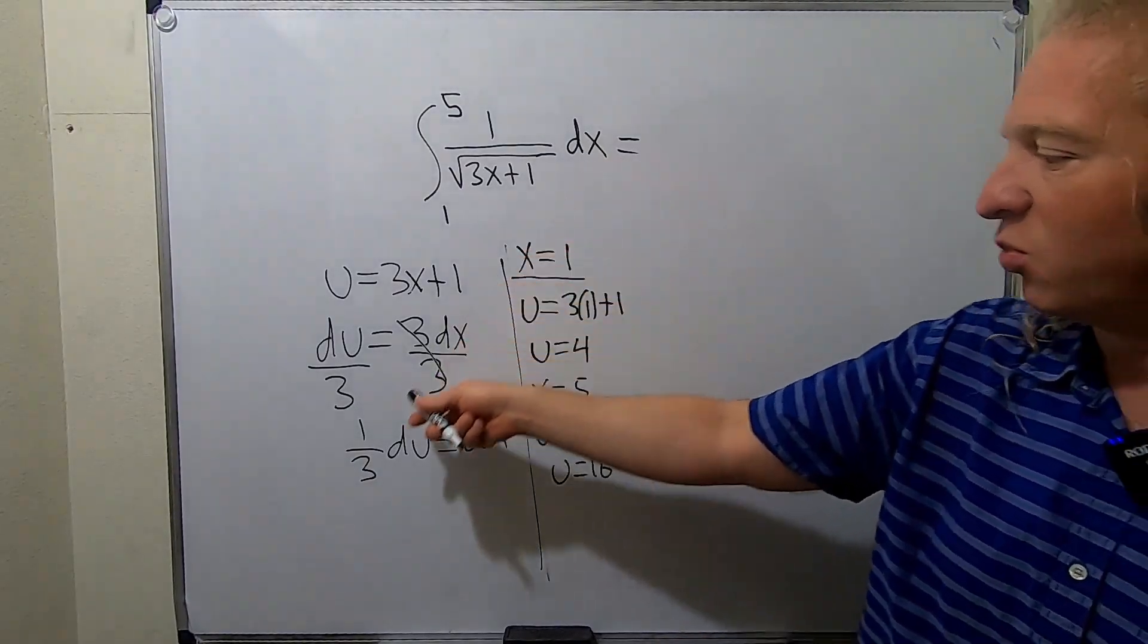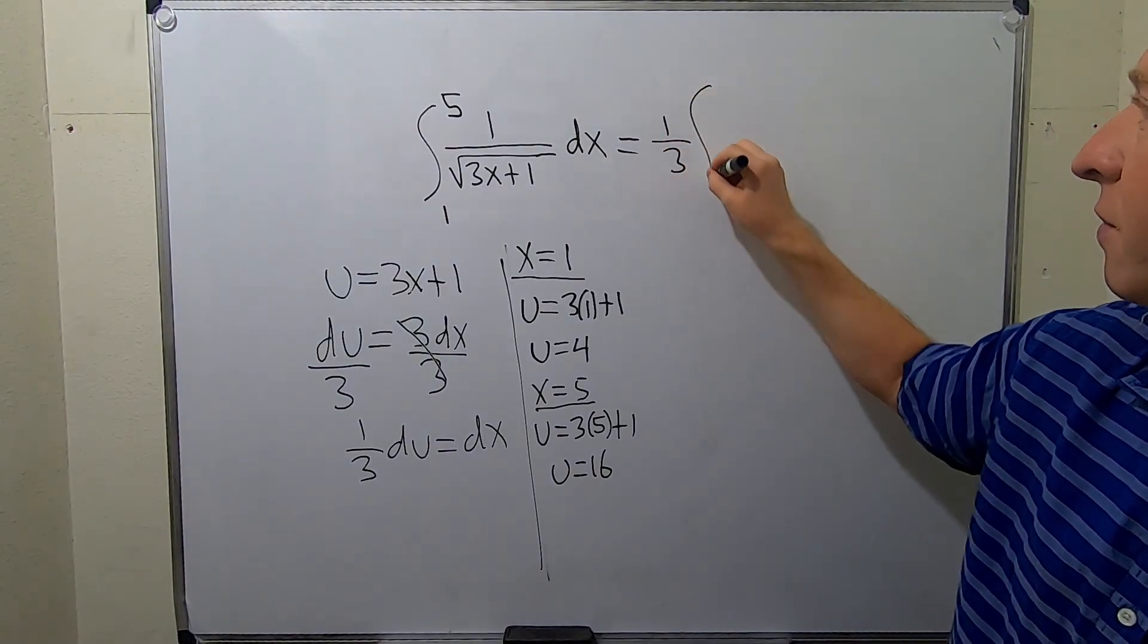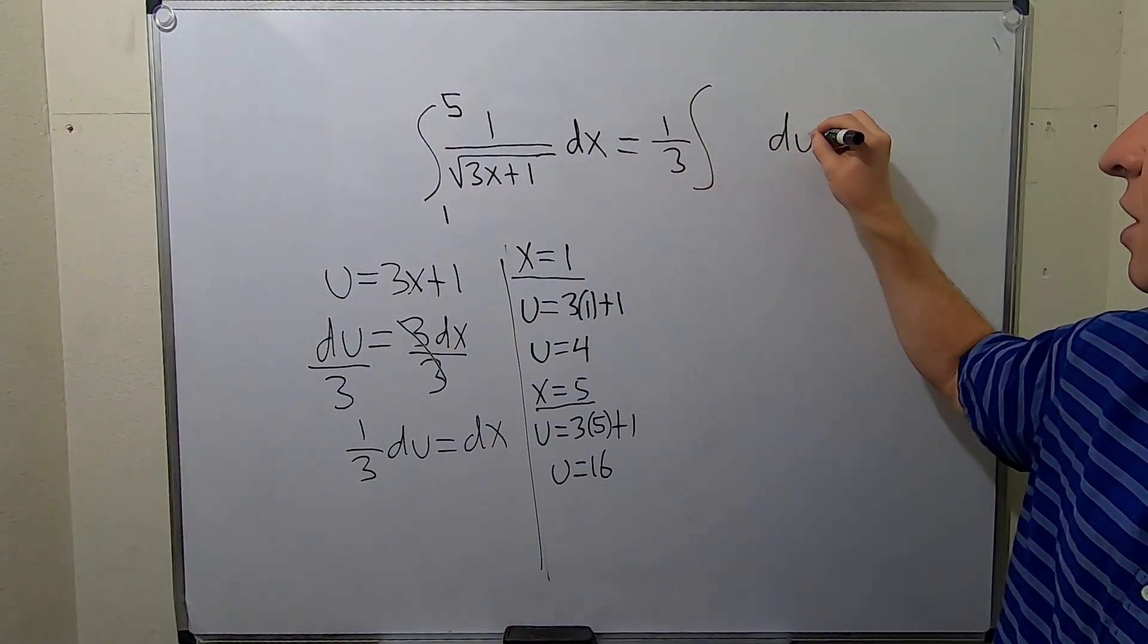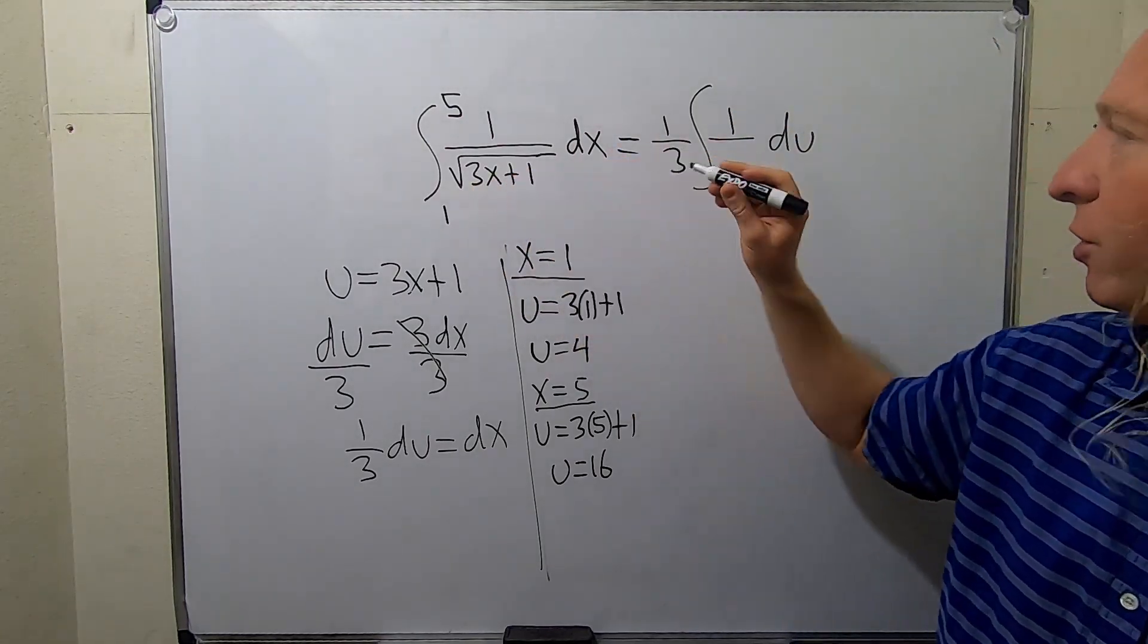So the dx is 1 third du, so we can pull out that 1 third. Then we have the du. Then we have the 1 up top. On the bottom we have the square root of u.